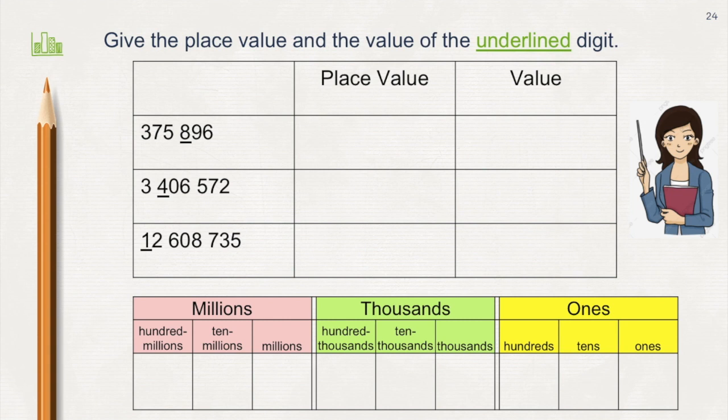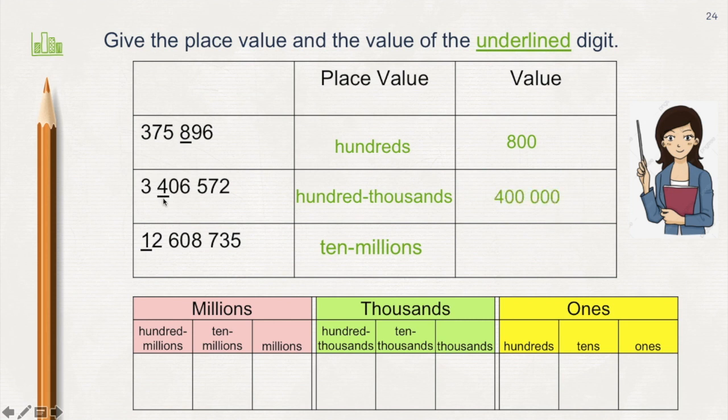This time, let's try to get the place value and the value of the underlined digit. The place value of the digit 8 here is hundreds. The place value of the digit 4 here is hundred thousands. And the place value of the digit 1 here is ten millions. You might want to use this place value chart as your guide. This time, let's get the value of each underlined digit: 8 here has a value of 800, 4 here has a value of 400,000, and lastly 1 has a value of 10,000,000.